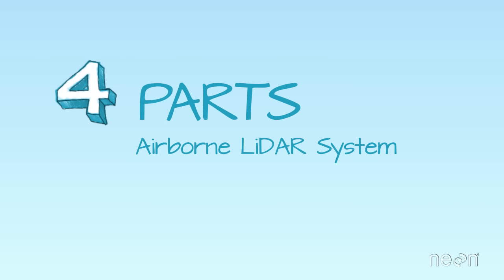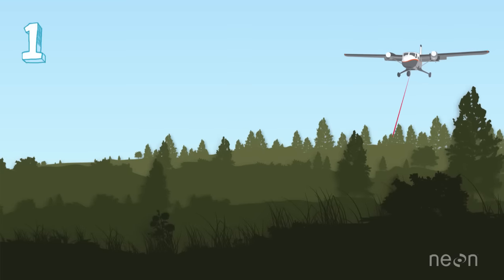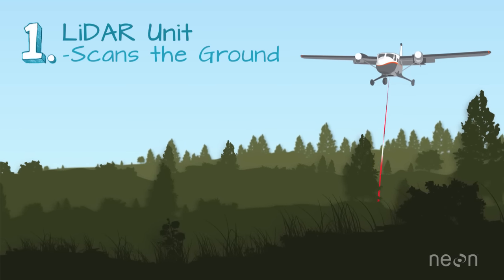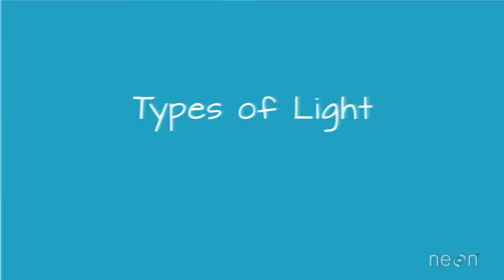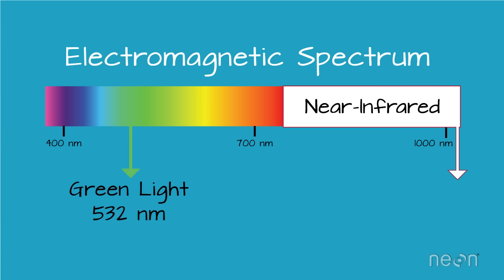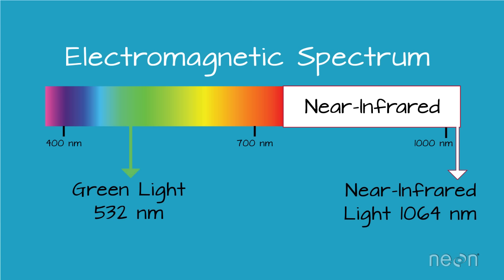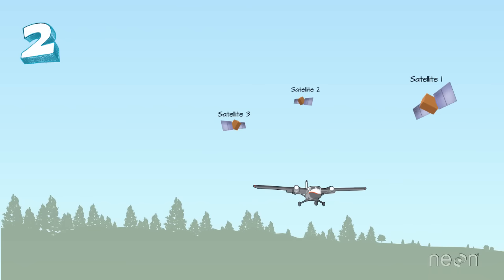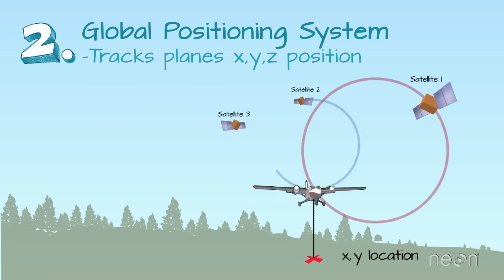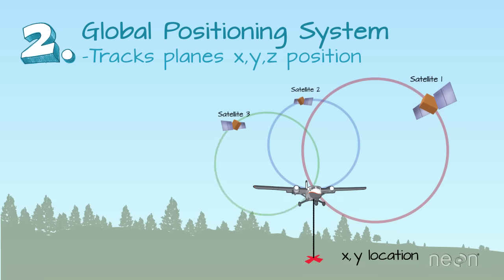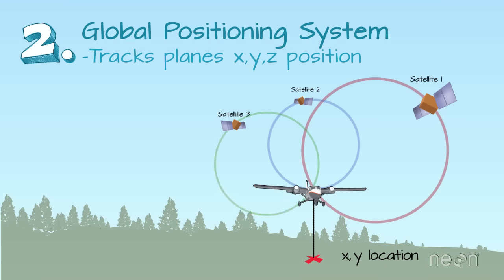To understand how lasers are used to calculate height in airborne LIDAR, we need to understand the four parts of the system. First, the airplane contains the LIDAR unit itself, which uses a laser to scan the Earth from side to side as the plane flies. The laser system uses either green or near infrared light, because these wavelengths reflect strongly off of vegetation. The next component is a GPS receiver that tracks the altitude and XY location of the airplane, allowing us to figure out where LIDAR reflections are on the ground.